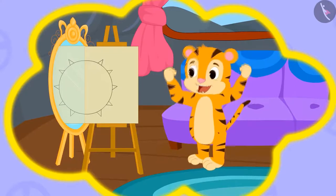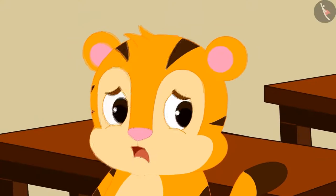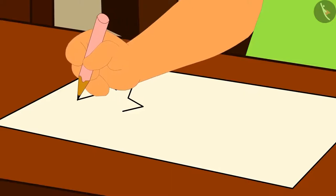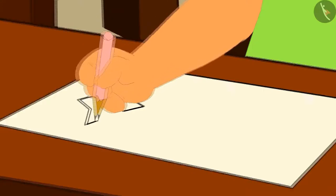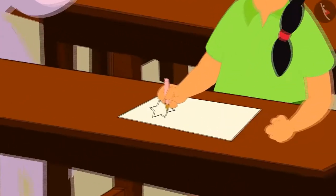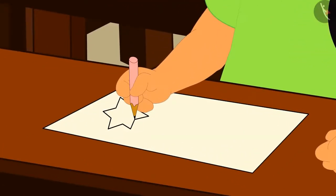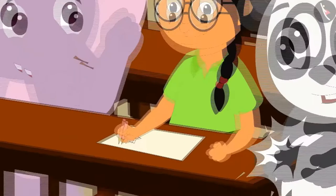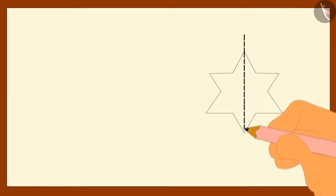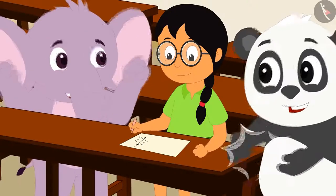Shere Khan became very popular because of his magical mirror. But one day, he noticed that there is a huge crowd around Minoo in the classroom. Minoo is telling children with the image of a star in her hand: 'I will draw a dotted line on the image and it will divide the image into similar parts.' She draws a line on the image. The children shout with excitement: 'Wow, this magic is better than Shere Khan's magical mirror!'